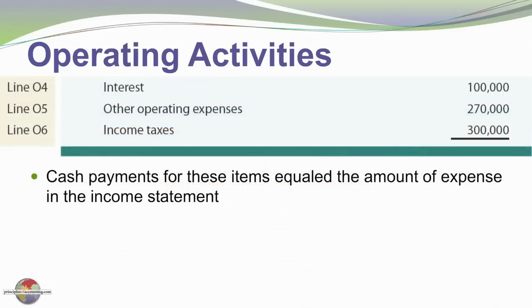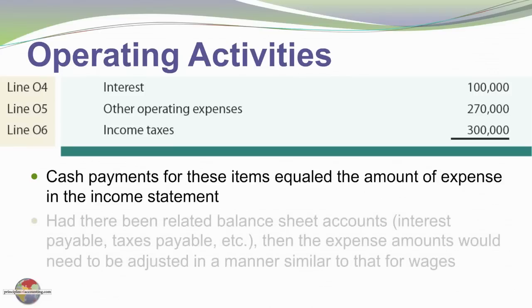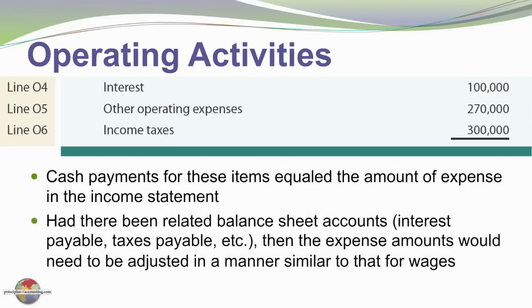We had some other items in our income statement — interest expense, other operating expenses, income taxes. For those, there were no related payables or receivables, so the expense incurred was also the amount paid. Had there been related balance sheet accounts for payables, the expense amount would need to be adjusted similarly to what we've done for the other items.